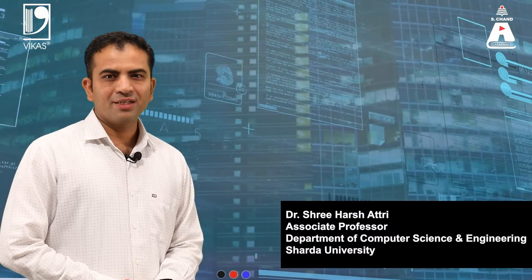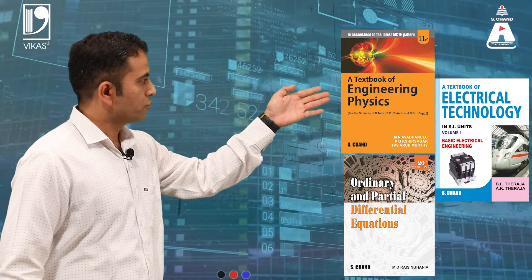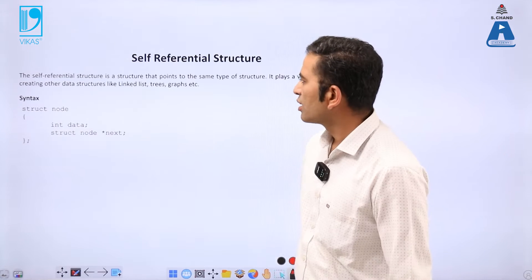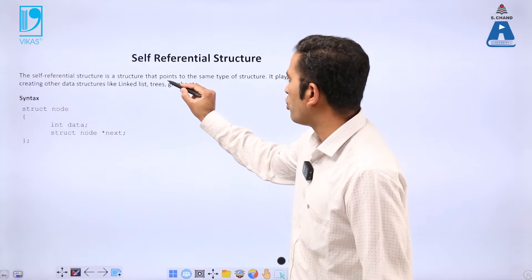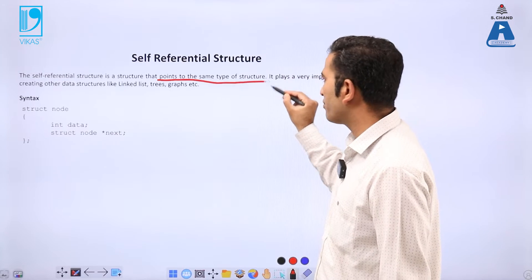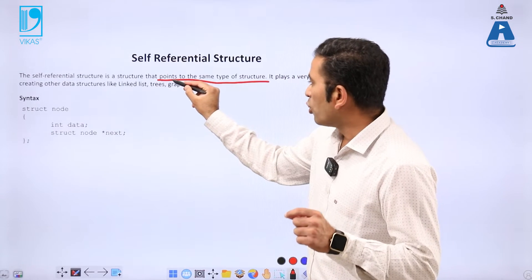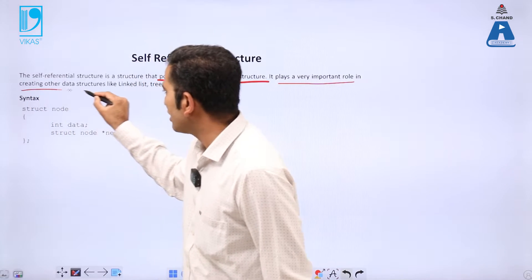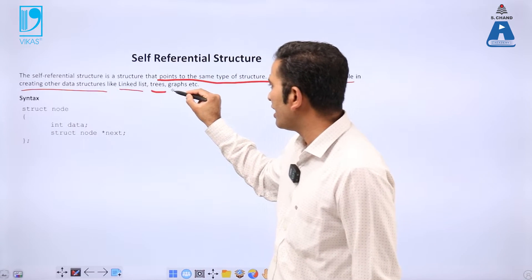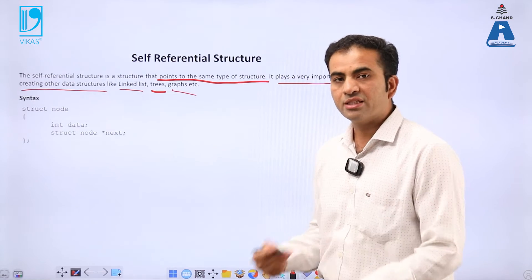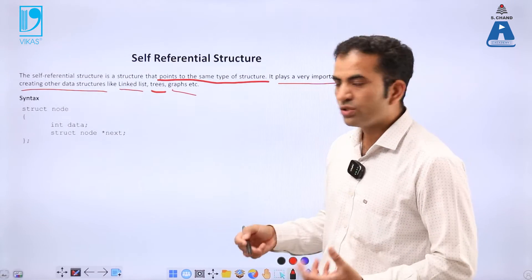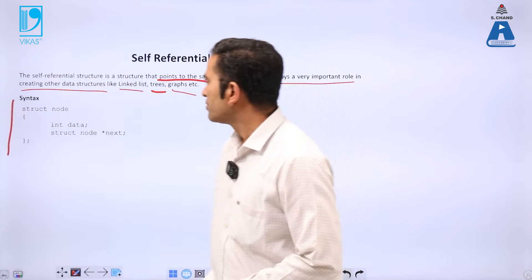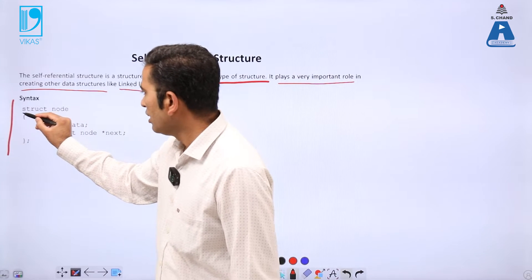I am Dr. Shriyash Atri, and these are some good books from S Chant Publishing. First of all, what is a self-referential structure? A self-referential structure is a structure that points to the same type of structure — point to be noted: it points to the same type of structure. It plays a very important role in creating other data structures like linked list, trees, and graph.